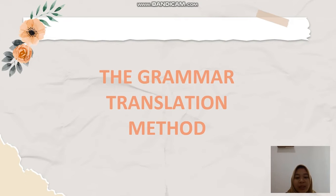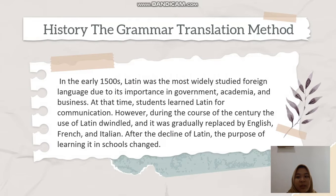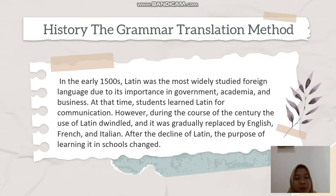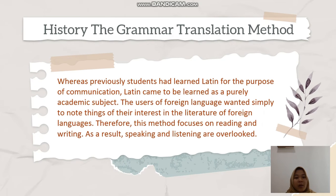The grammar translation method. In the early 1500s, Latin was the most widely studied foreign language due to its importance in government, academic, and business. At the time, students learned Latin for communication. However, during the course of the century, the use of Latin declined and it was gradually replaced by English, French, and Italian. After the decline of Latin, the purpose of learning it in school changed. Where previously students had learned Latin for the purpose of communication, Latin came to be learned as a purely academic subject.